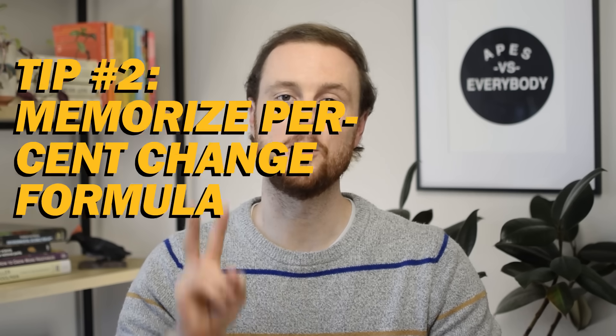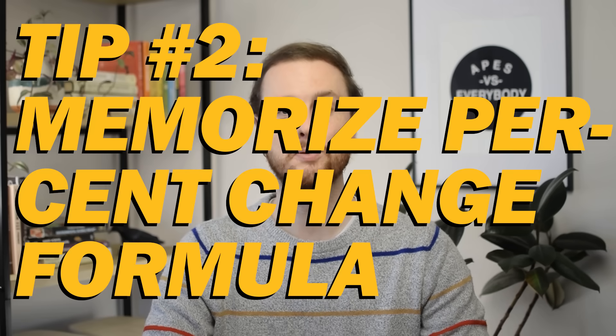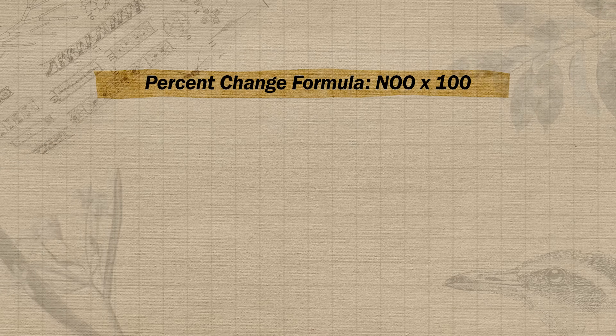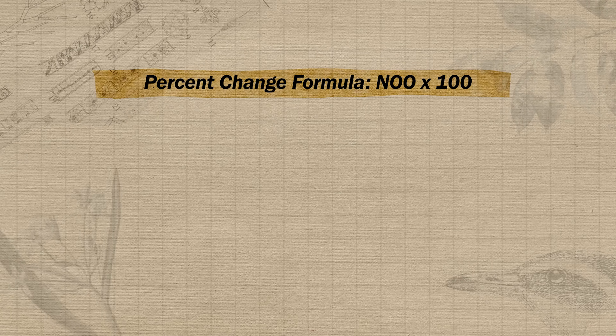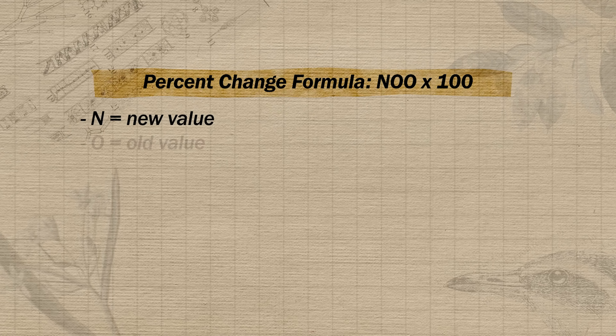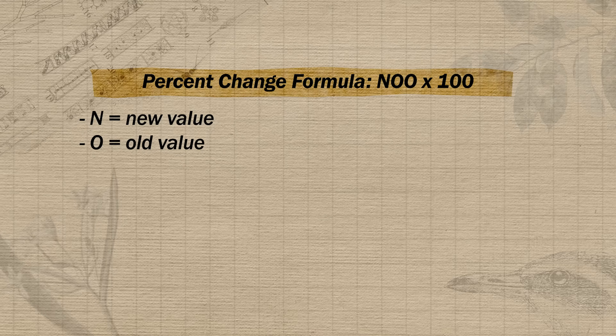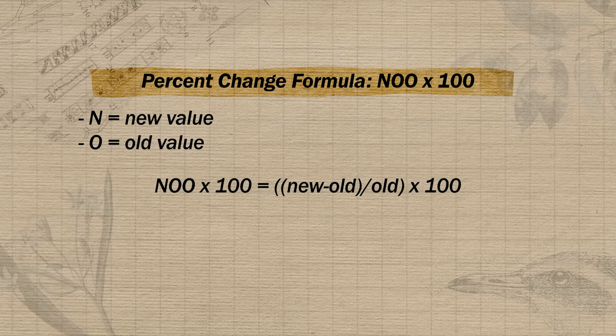FRQ math tip number two is to memorize the percent change formula. There were percent change questions on both of the released 2021 FRQ sets and on the official practice exams released by the College Board, so you're almost certainly going to see percent change on this year's exam. The way I like to help students remember it is 'new over old times 100,' where N stands for the new value, O stands for the old value, and you multiply by 100 to turn it into a percent.